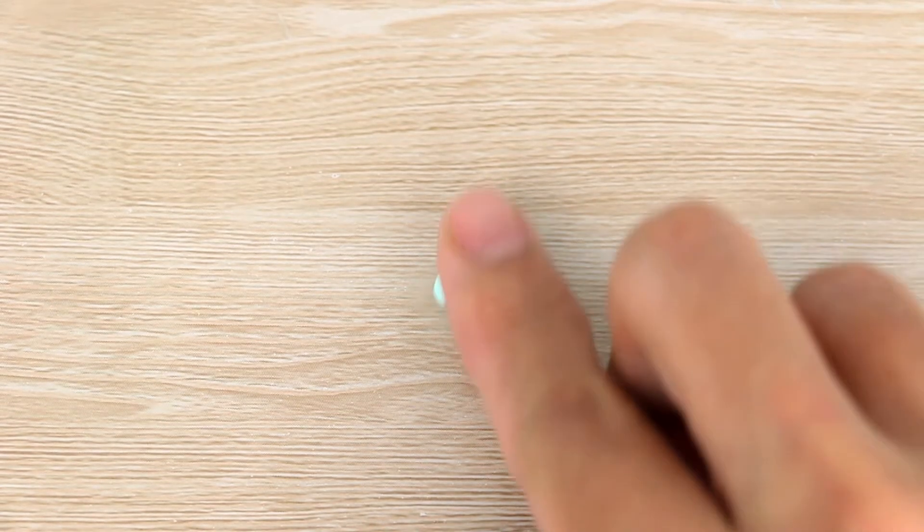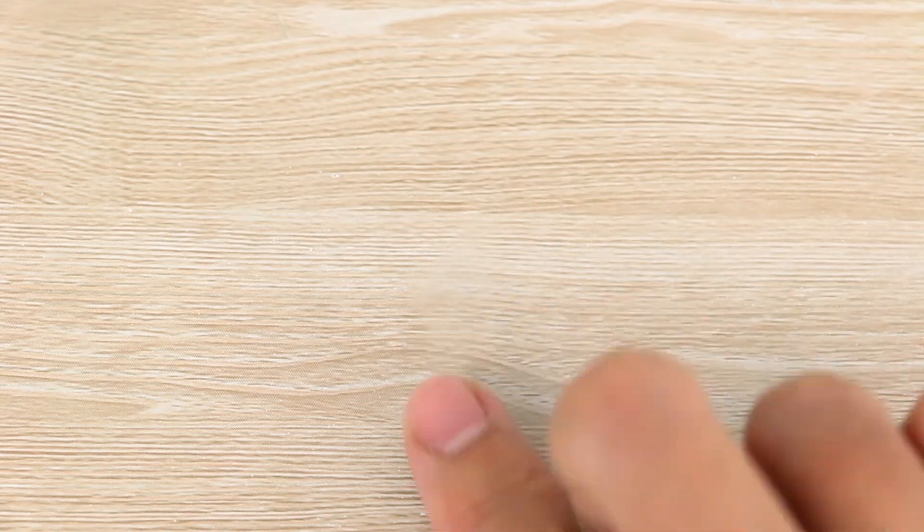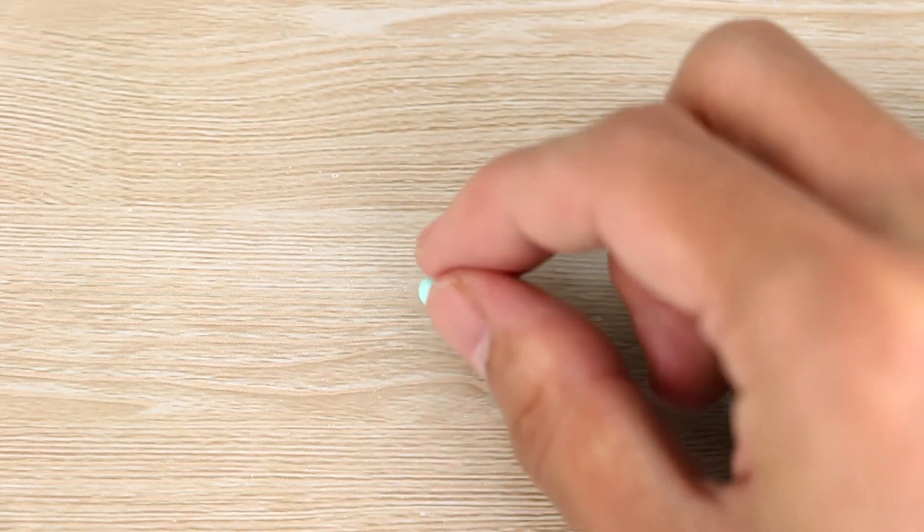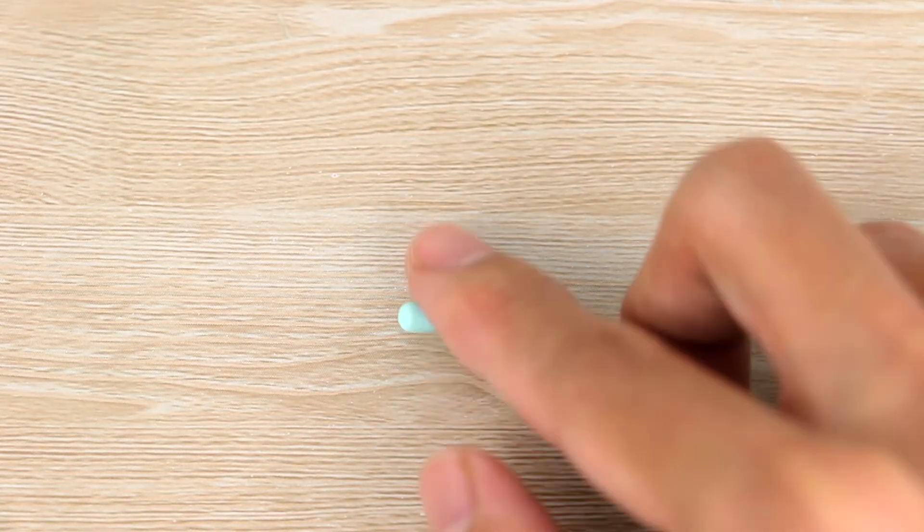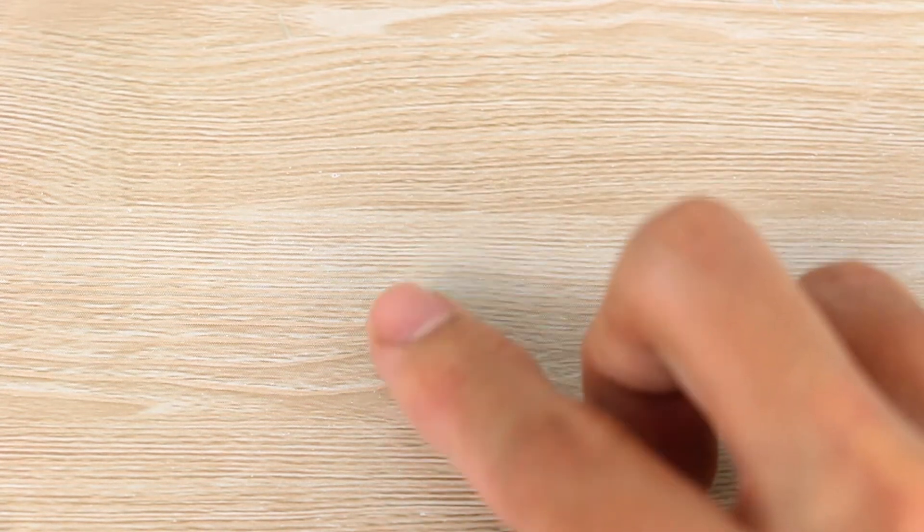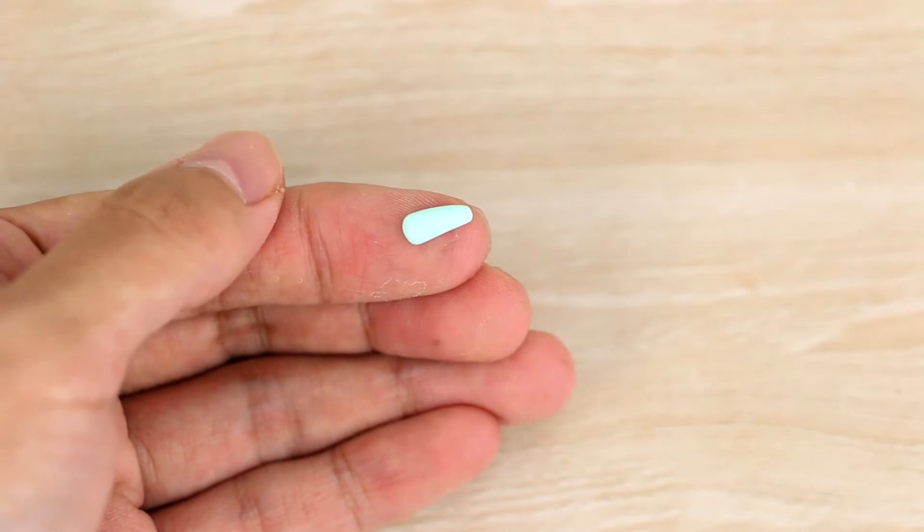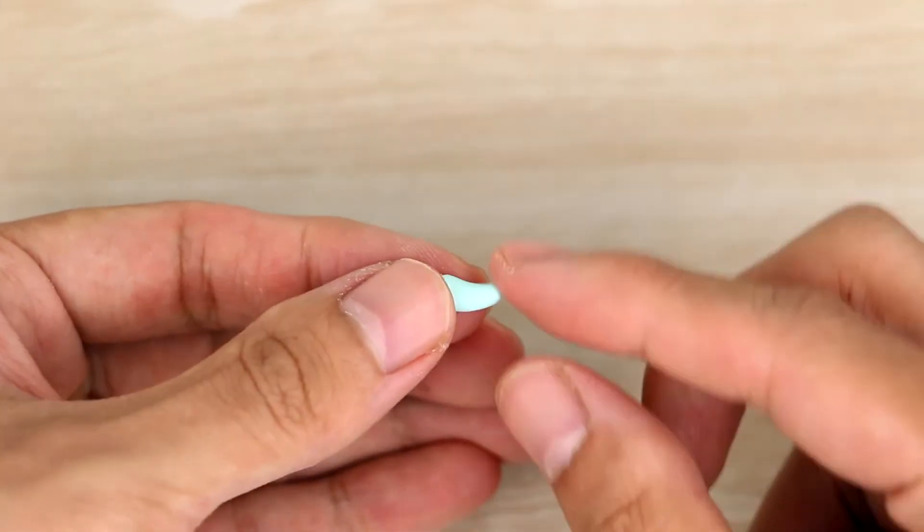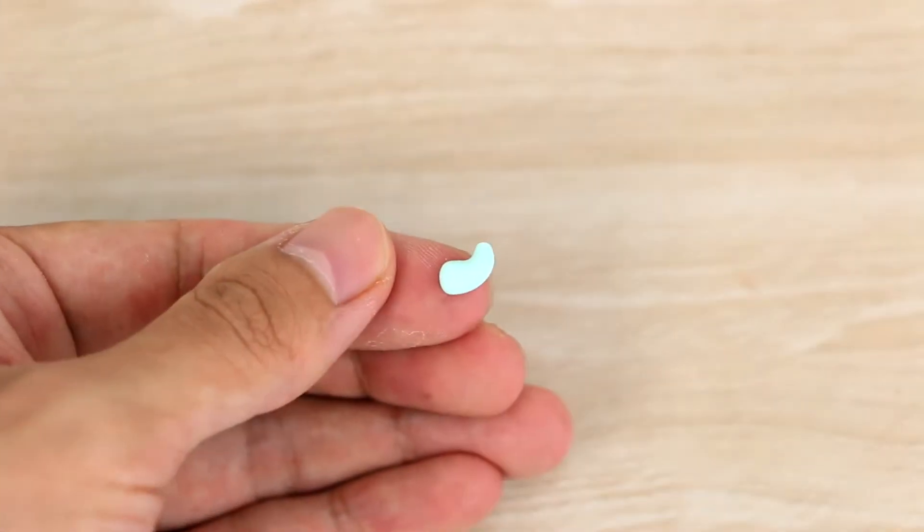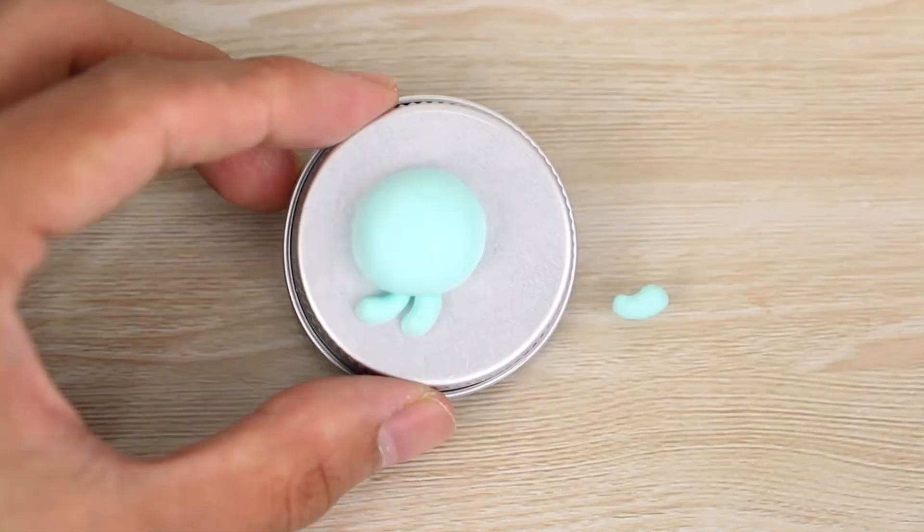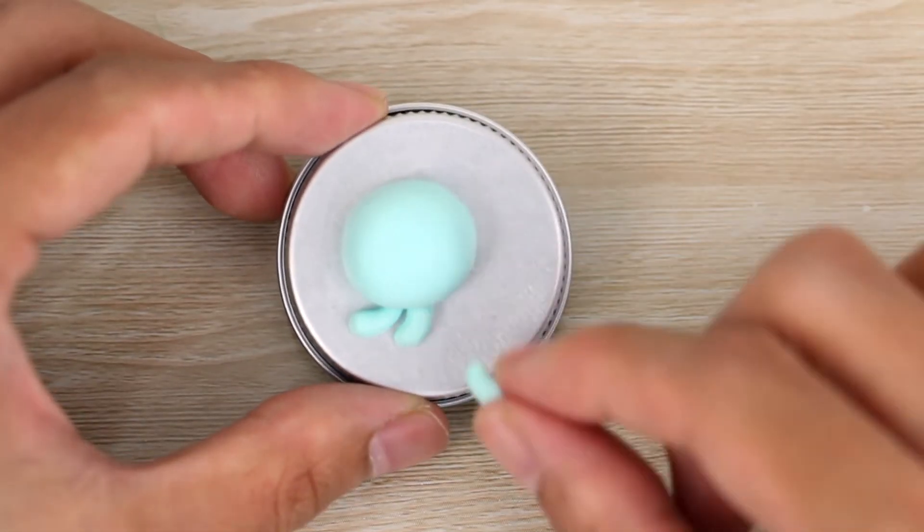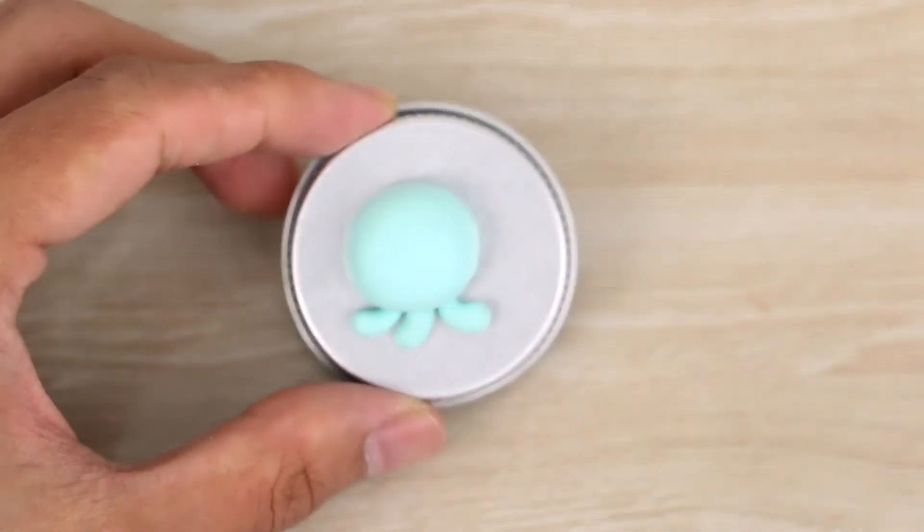I then have a small ball of the same color and I'm gonna roll that into a teardrop shape, and then bending the thinner end up a bit slightly. I've made three of these all together and I'm just gonna place them onto the bottom of the head.